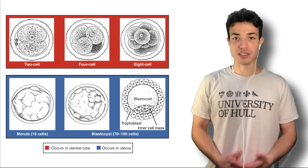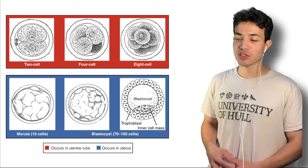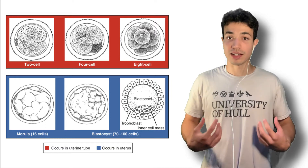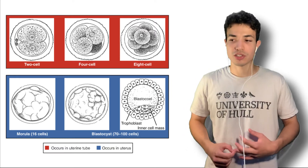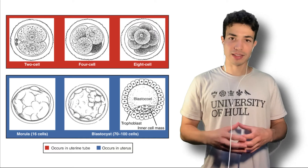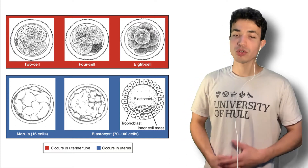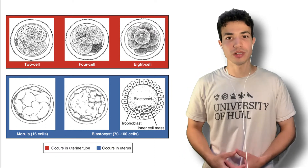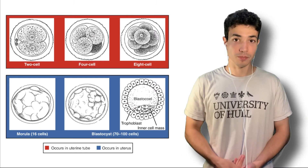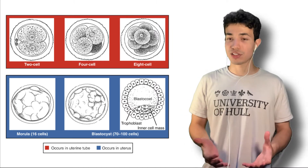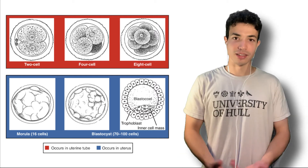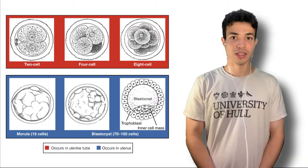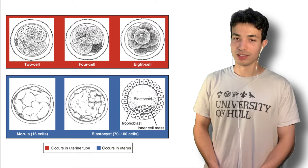The zona pellucida surrounds the egg at fertilization. As we can see, the developing embryo is not really growing in size — it is essentially just dividing itself but not growing because it is encapsulated by the zona pellucida. For most of this initial week of development it will remain encapsulated by the zona pellucida until we have something called hatching — so kind of like an actual egg, it does hatch. That's the blastocyst hatching, and we'll have a look at that properly in just a bit.